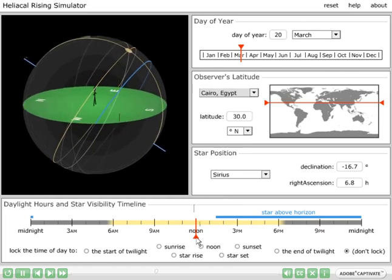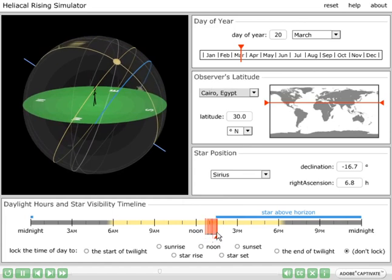I'm going to grab the time cursor here and start slowly advancing time. We see the sun getting closer to the western horizon.